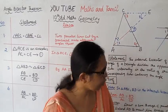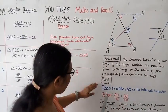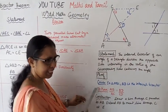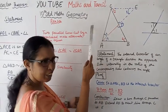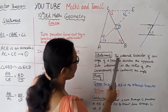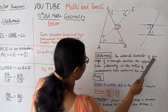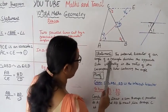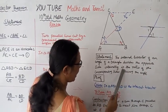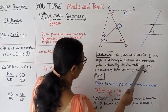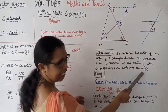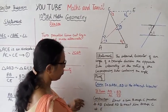Let's start. Statement, proof, given, to prove, construction. Statement: the internal bisector of an angle of a triangle divides the opposite side internally in the ratio of the corresponding sides containing the angle. This is the proof.